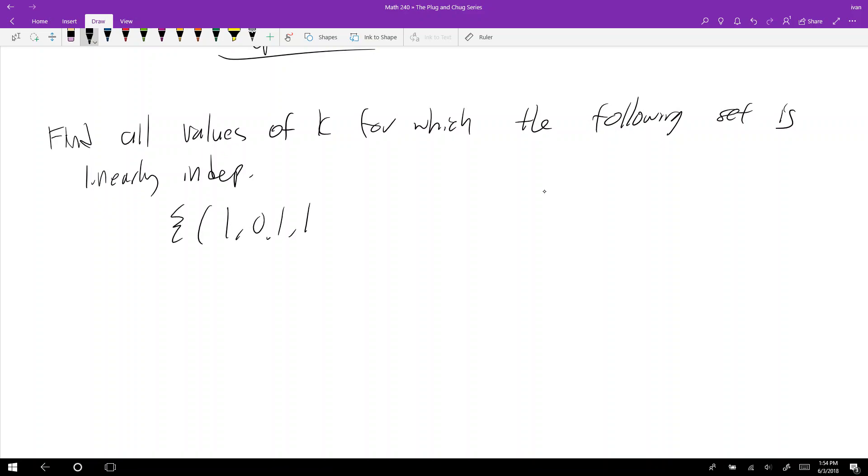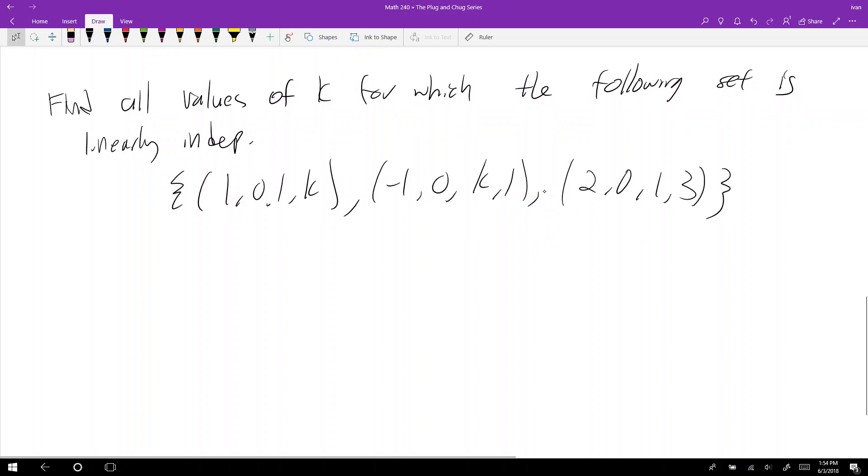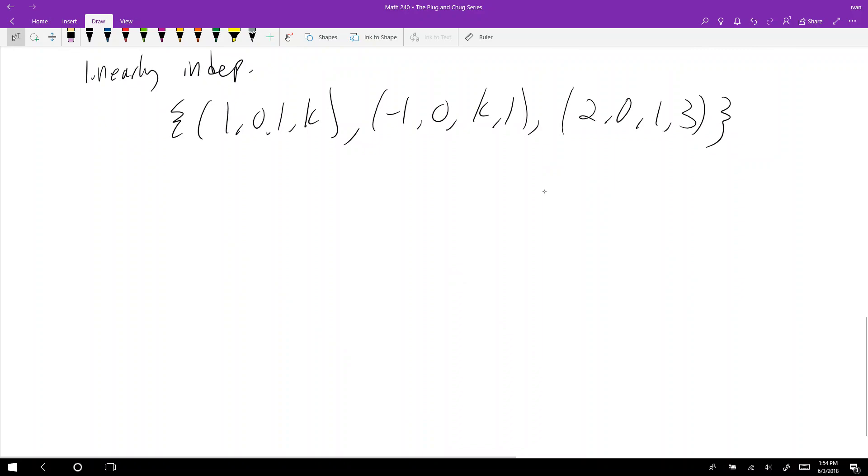...that one, zero, one, K; negative one, zero, K, one; two, zero, one, three. All right, so what are we going to do? Well, like in the previous video, we're going to put these guys into column vectors into a matrix. So we got one, zero, one, K; negative one, zero, K, one; and then two, zero, one, three. And remember what do I want to do?